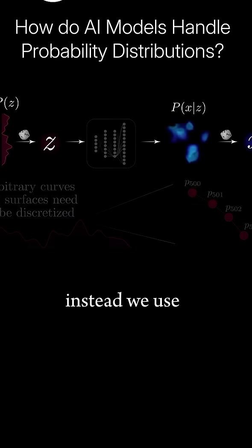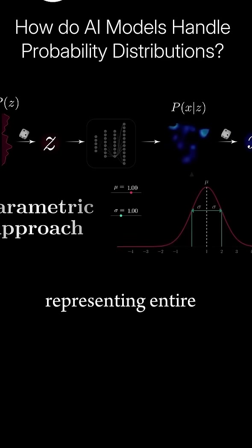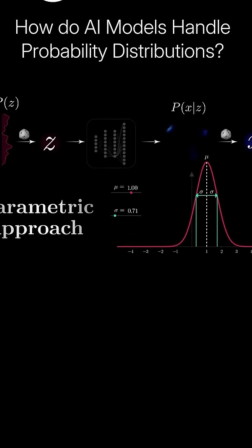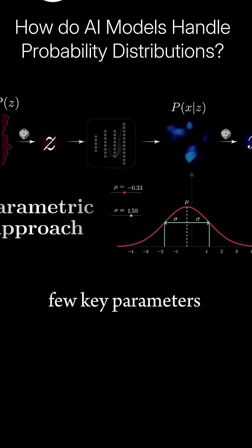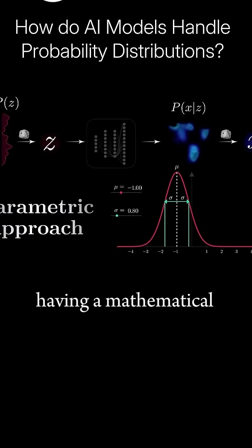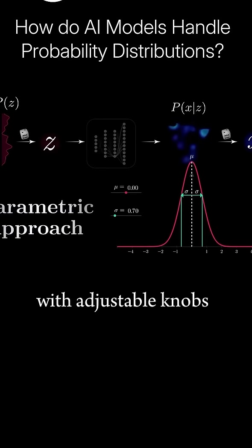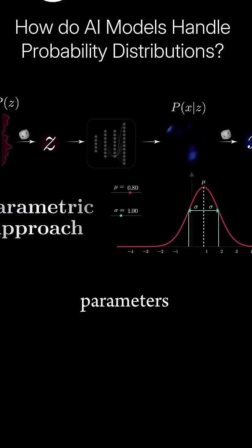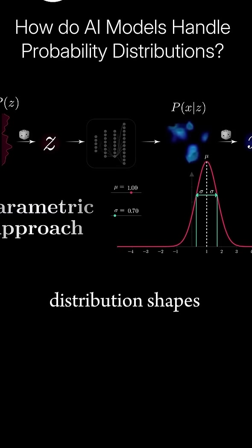Instead, we use what's called a parametric approach, representing entire distributions with just a few key parameters. This is like having a mathematical formula with adjustable knobs, where plugging in different values for a few parameters fully determines different distribution shapes.